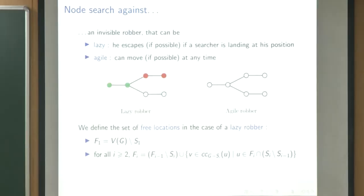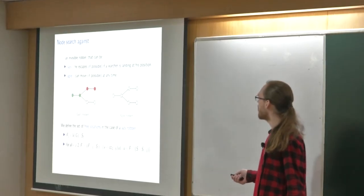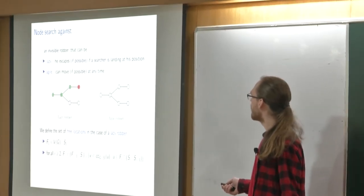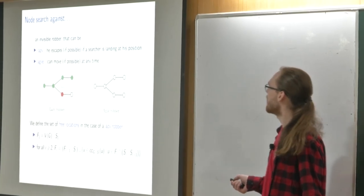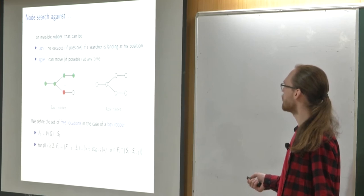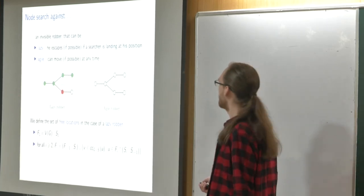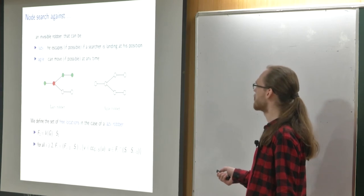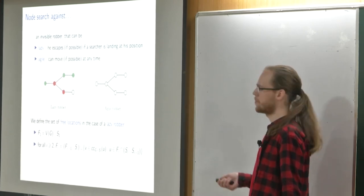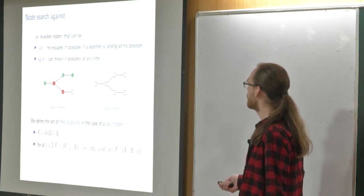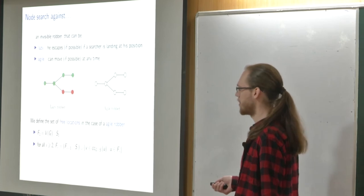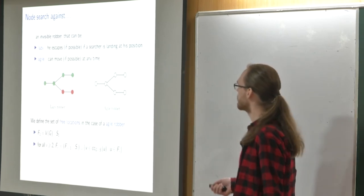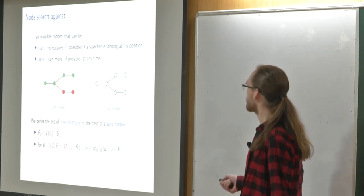The robber can only cross through edges — he cannot jump. So this is fine. We can also remove searchers and continue, but we cannot place a searcher in a position where a robber could move back, as that would allow him to be anywhere on the green parts. The good move is to first place a searcher there, then place another, because now the robber cannot move there. After this, we finish by occupying all remaining places and the robber must be caught.